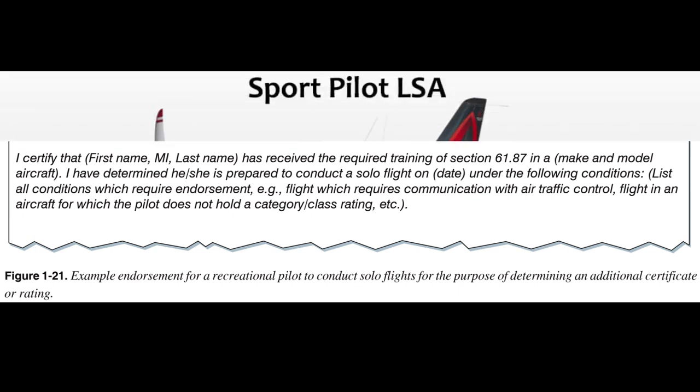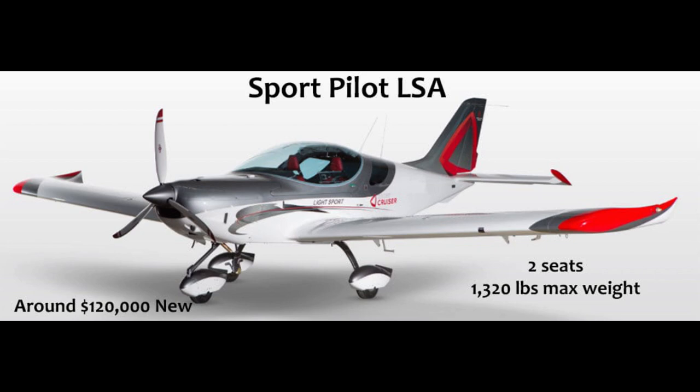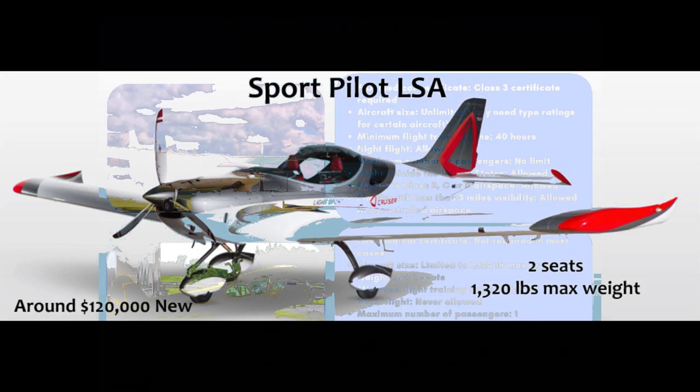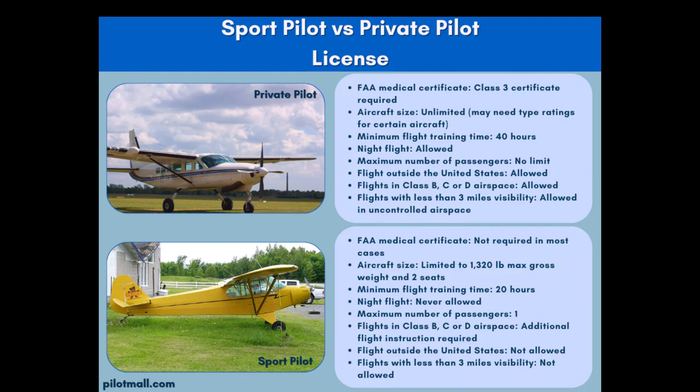Sport Pilot. To become a sport pilot, the student pilot is required to have flown at a minimum the following hours depending upon the aircraft: (1) airplane — 20 hours; (2) powered parachute — 12 hours; (3) weight-shift control (trikes) — 20 hours; (4) glider — 10 hours; (5) rotorcraft, gyroplane only — 20 hours; and (6) lighter than air — 20 hours for airship, or 7 hours for balloon. To earn a sport pilot certificate, one must: (1) be at least 16 years old to become a student sport pilot (14 years old for gliders or balloons); (2) be at least 17 years old to test for a sport pilot certificate (16 years old for gliders or balloons); (3) be able to read, write, and understand the English language; and (4) hold a current and valid driver's license as evidence of medical eligibility.